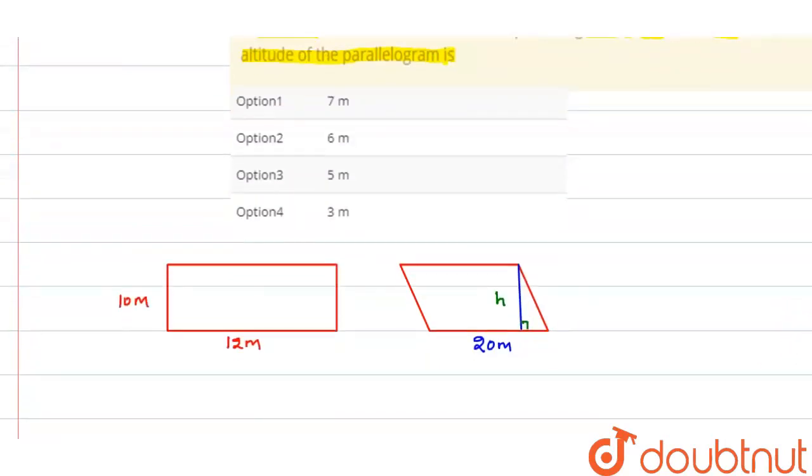Now, we know that the area of the rectangle is L into B, that means 10 into 12. And area of the parallelogram is base into height. Since base is 20 and height is H, so 20 into H.